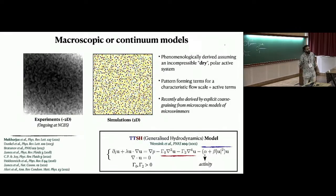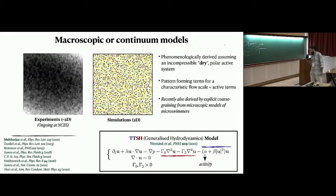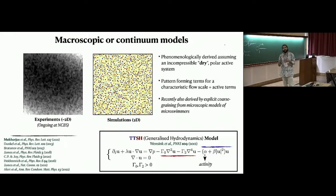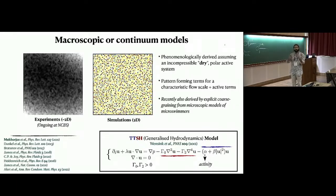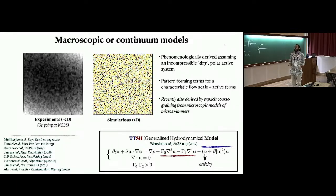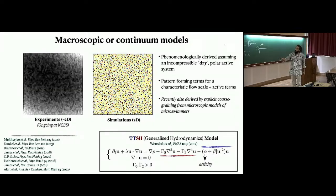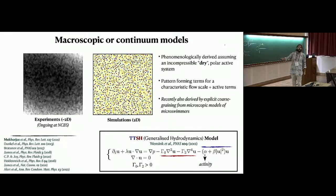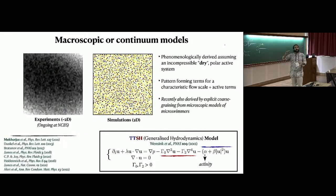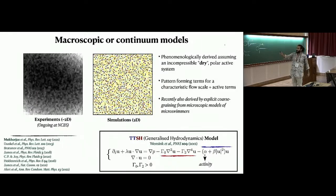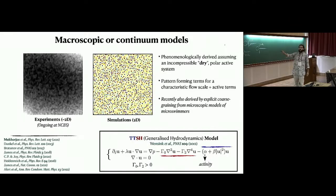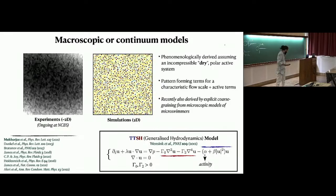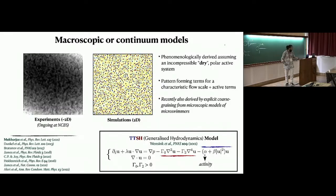There are other assumptions in the model — for instance, that the velocity is perfectly aligned with the local polar direction, so you assume you're moving in the direction you're pointing. Simulating these equations gives you a vorticity field where red and blue are oppositely signed vortices moving around. If you blur your eyes, these flows look similar to experiments. The model is quite capable of reproducing experimentally observed flows, and people have also derived the same thing by coarse-graining microswimmer models.